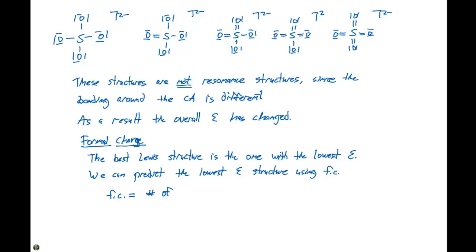We can predict the lowest energy structure using formal charge. And the formal charge is going to equal the number of valence electrons minus the number of bonds minus the number of lone pair electrons.